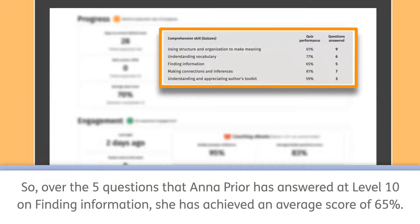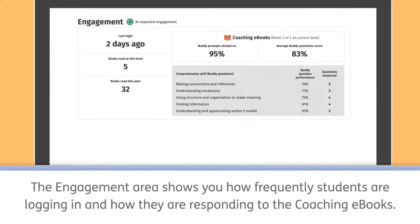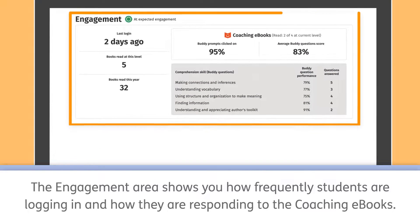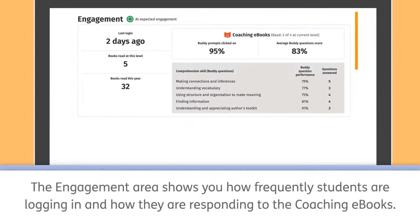The quiz performance column shows the aggregated score for each comprehension skill within the current level. So, over the five questions that Anna Pryor has answered at level 10 on finding information, she has achieved an average score of 65%. The engagement area shows you how frequently students are logging in and how they are responding to the coaching e-books.